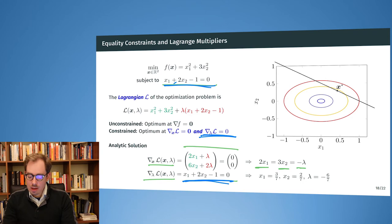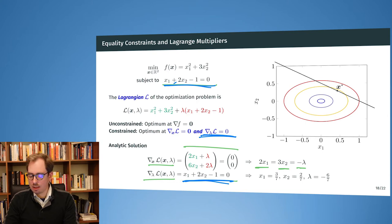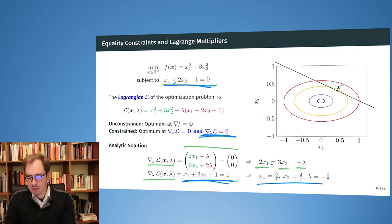Now I can plug in the original results. I can take x1 equals 3/2 times x2 and plug that into the lower equation, then just analytically solve that. The analytical solution is x1 equals 3 sevenths and x2 equals 2 sevenths.